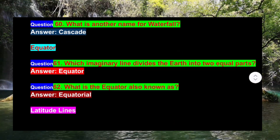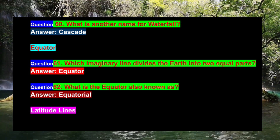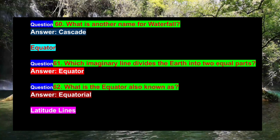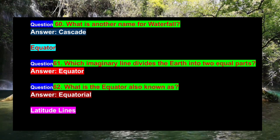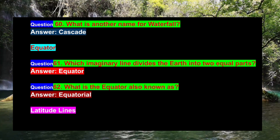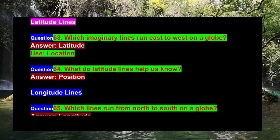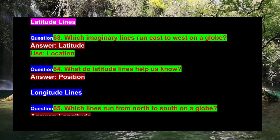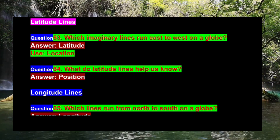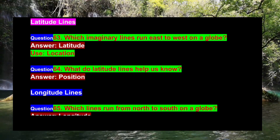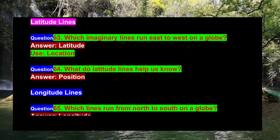Question 60: What is another name for waterfall? Answer: Cascade. Question 61: Which imaginary line divides the earth into two equal parts? Answer: Equator. Question 62: What is the equator also known as? Answer: Equatorial. Question 63: Which imaginary lines run east to west on a globe? Answer: Latitude. Use: Location.